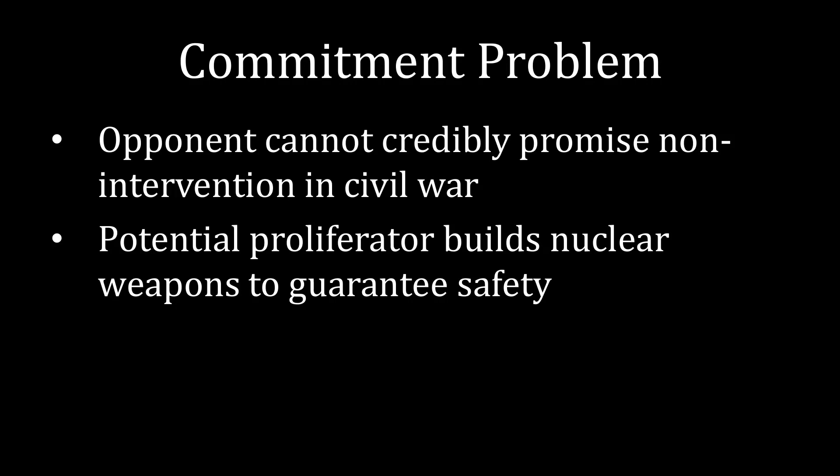The opponent would love to be able to promise not to go in should a civil war break out, because that would mean the potential proliferator would have no reason to develop nuclear weapons. The problem is that when push comes to shove, the opponent will want to intervene. Under the standard model, the way the potential proliferator would punish the opponent for backtracking on its agreement is to build nuclear weapons. But the civil war is going to remove the government from existence, and as a consequence, the potential proliferator will not be around long enough to punish the opponent for backtracking on the deal. Internalizing all of that, the government simply builds nuclear weapons while it can.